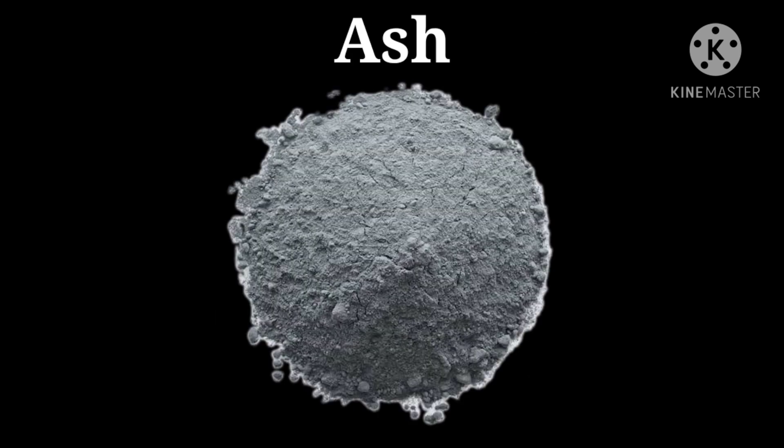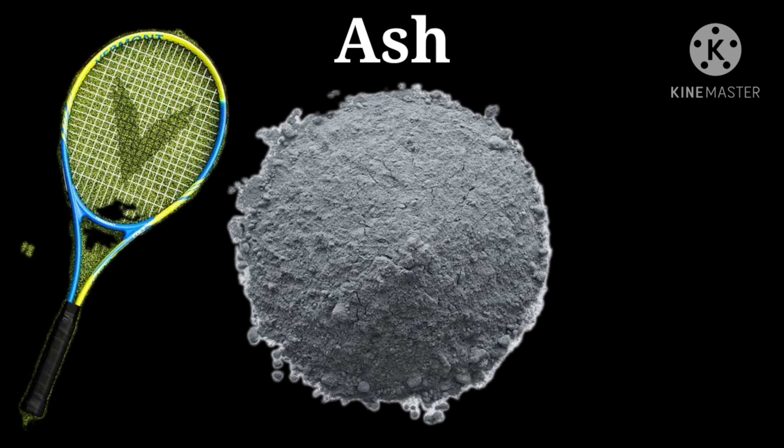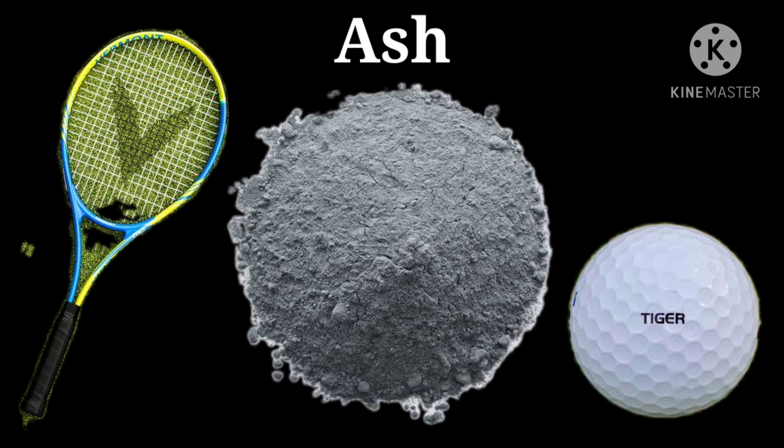Here I would like to tell you about ash — ash yani ki raak — a by-product of coal combustion. Koile ko jalaane ke baad jo ash bachti hai, raak bachti hai, it is used as a filler for things like tennis rackets and golf balls. Us ash ka istimaal filler ke roop mein kiya jaata hai — tennis rackets mein aur golf ki balls jo banti hain, unmen use kiya jaata hai.